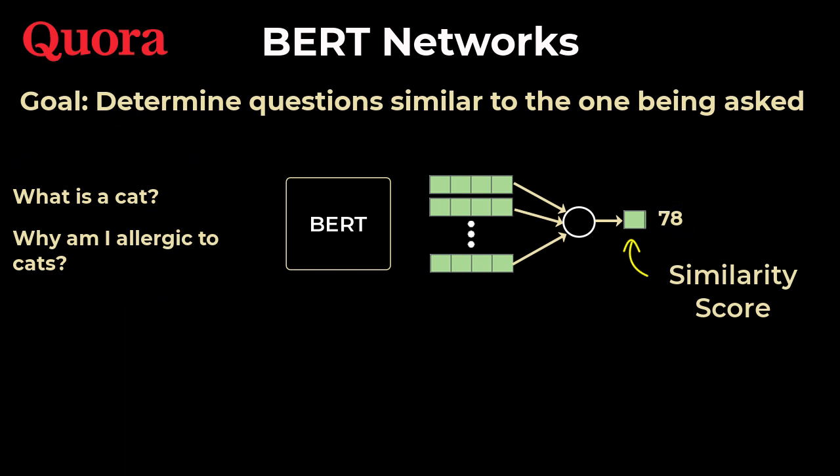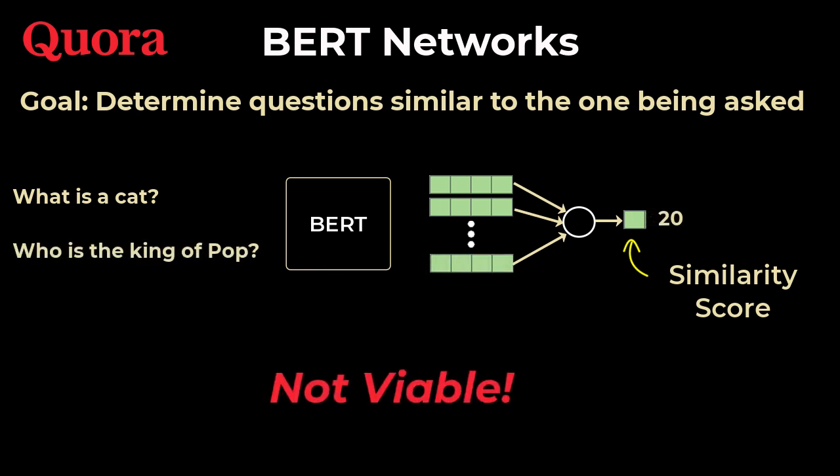But there's a big problem here. If there are 100 million questions on Quora, then we need to run the forward pass of BERT 100 million times every single time a new question comes in. This is not viable. So how do we make BERT viable?